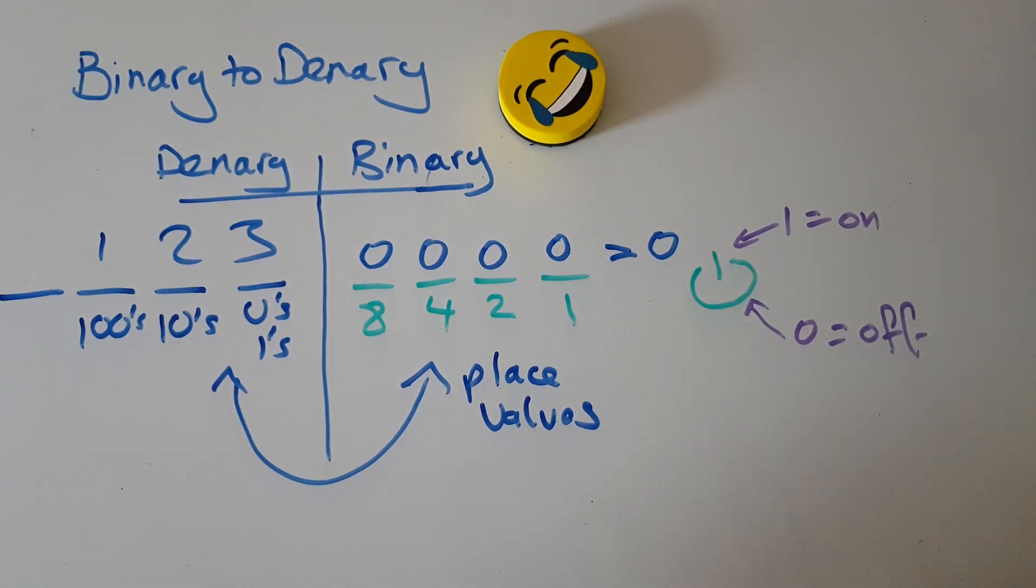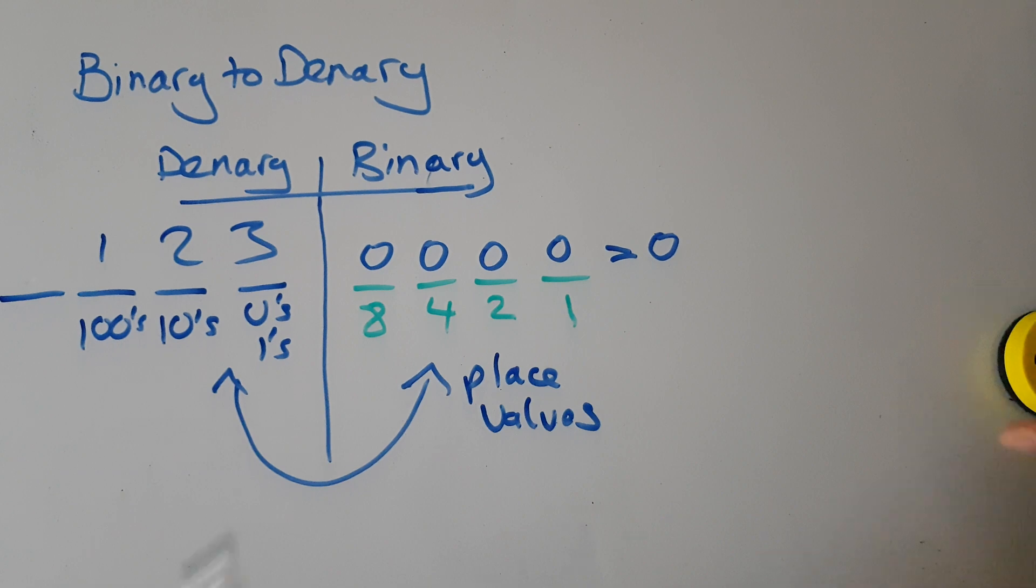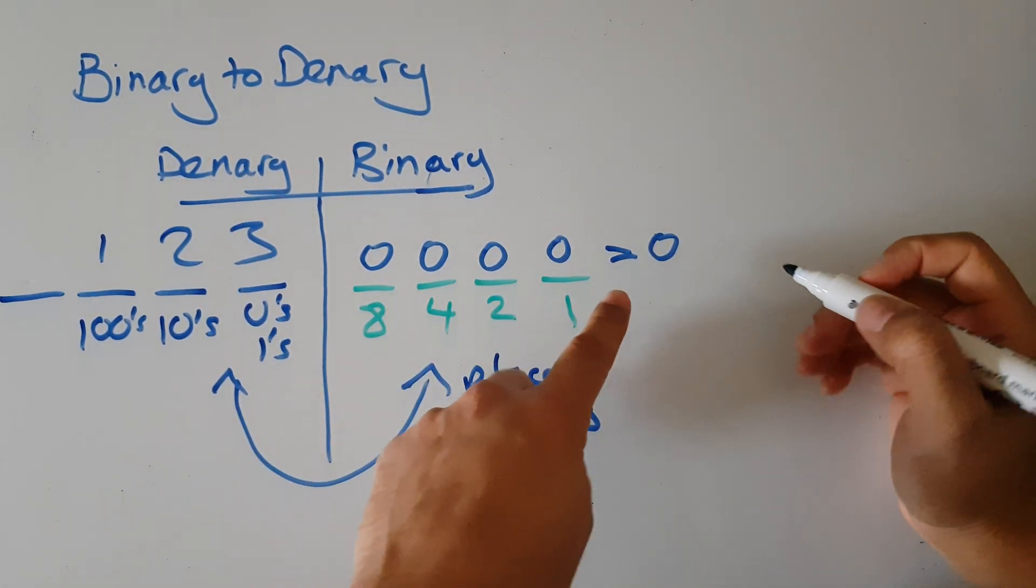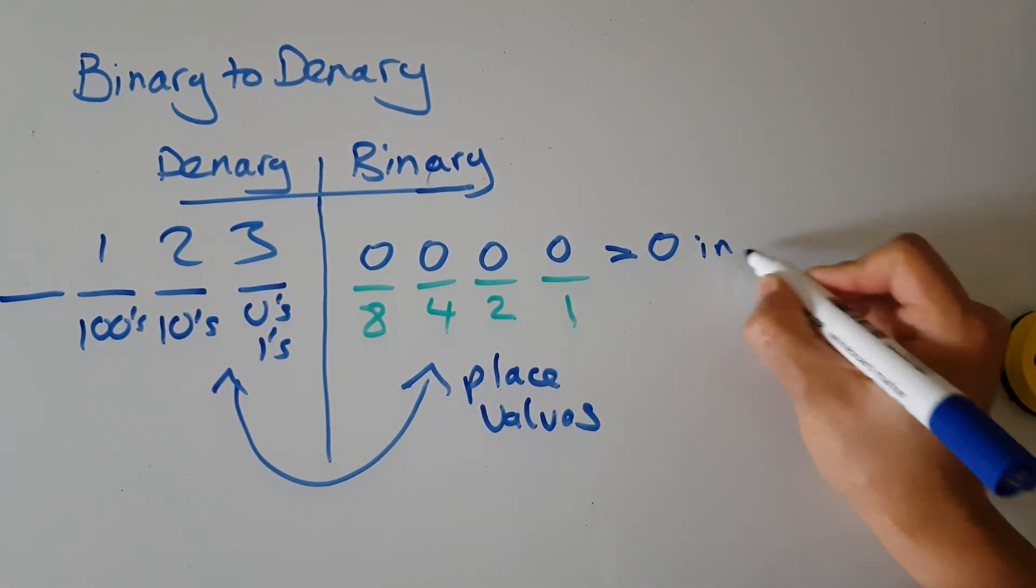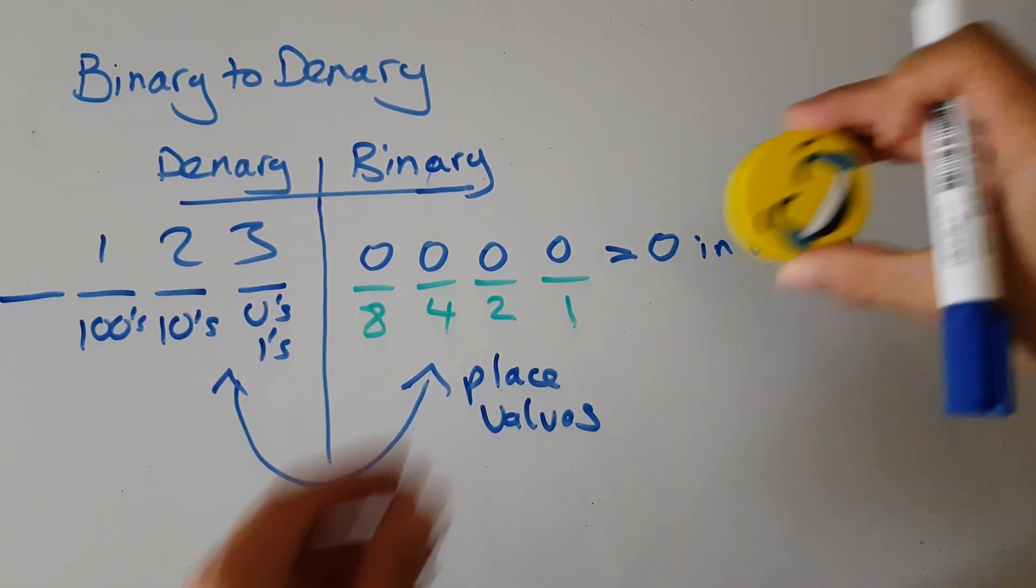Well, the answer is zero, simply because I haven't switched on any of the place values. So 0000 equals zero in denary. Okay, not very exciting, but let's move on.